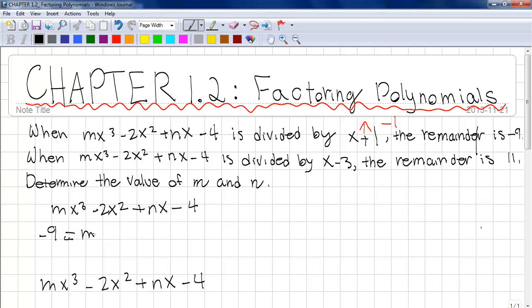So then m(-1)³ - 2(-1)² + n(-1) - 4. Now we want to simplify it. -9 equals negative 1 cubed will still be -1. We have -1 squared would be 1 multiplied by 2, which will be -2, and -n - 4. So that's as much as we can simplify it.